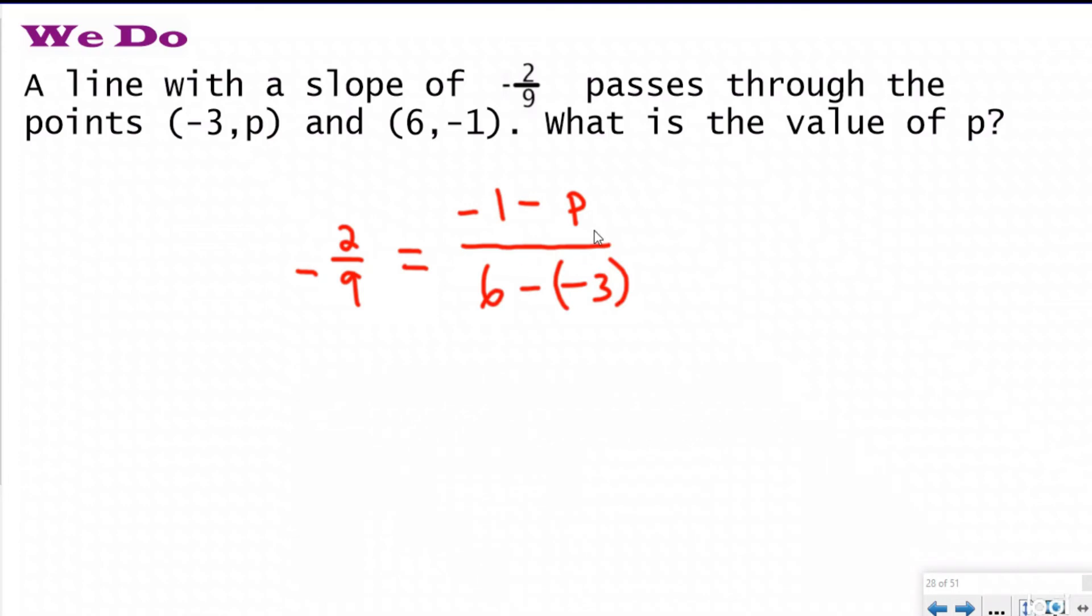And then just like normal, I'm trying to solve for my variable, so I need to simplify and combine all my like terms that I know. So over here I have negative 2 ninths still, and that's going to equal—and I can't combine anything on the top of my ratio. But I do know that two negatives make a positive, so that's going to cancel out, and I'm going to do 6 plus 3, which is 9. Now I actually have a proportion. I have two ratios that are equivalent to each other.